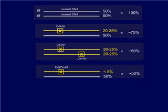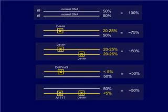Next we see the effect of the deletion-7 mutation. In this case, less than 5 percent of enzymatic activity occurs, so an individual who carries just one such mutation has only 50 percent total enzymatic activity. We then see the effect of the D444 mutation when it occurs on the same chromosome as the A171 mutation — in this case the enzymatic activity is less than 5 percent for that chromosome and total enzymatic activity is around 50 percent. All of these individuals with these possible mutations would essentially be normal.